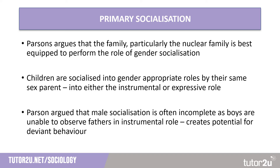Primary socialisation, which according to Parsons was one of the most basic and irreducible functions of the family unit, also socialises children into their gender roles through the process of gender socialisation. Like other functionalists, Parsons argued that the nuclear family — two adults of opposite sexes and their children — was the optimal structure for performing this task. Children could be socialised by their same-sex parent into the expectations of their appropriate gender role.